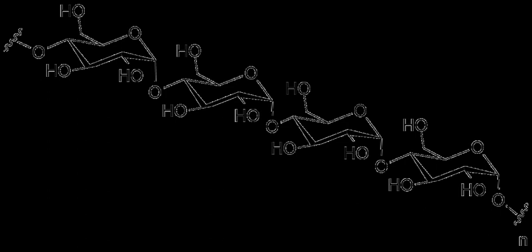In the liver hepatocytes, glycogen can compose up to 8% of the fresh weight soon after a meal. Only the glycogen stored in the liver can be made accessible to other organs. In the muscles, glycogen is found in a low concentration of 1-2% of the muscle mass. The amount of glycogen stored in the body—especially within the muscles, liver, and red blood cells—varies with physical activity, basal metabolic rate, and eating habits such as intermittent fasting.